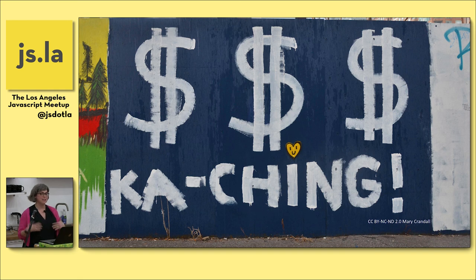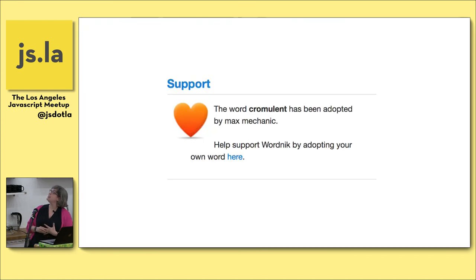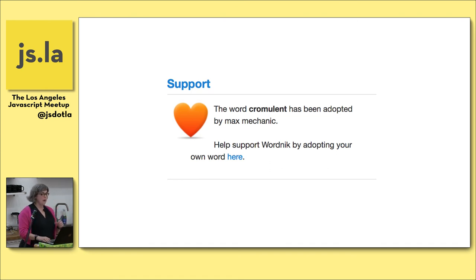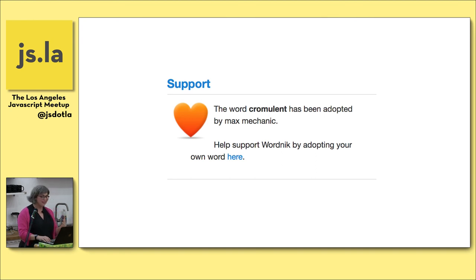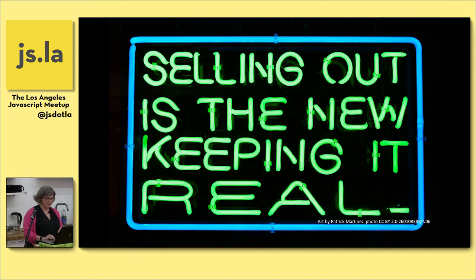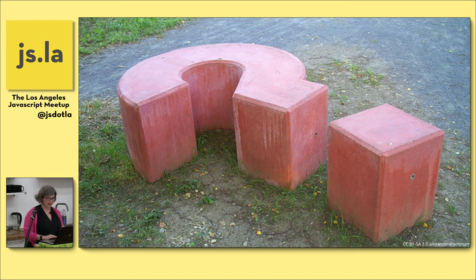We have to support ourselves as a nonprofit — right now through some paid API use and by people adopting a word on Wordnik. For example, the wonderful Max Mechanic adopted the word 'cromulent' — it costs $25, lasts for a year, and you get stickers and a downloadable certificate. I was using a database-as-a-service when I started this and they went end-of-life very quickly and painfully — but I had just found out about Loopback, so I was able to replace it very quickly.